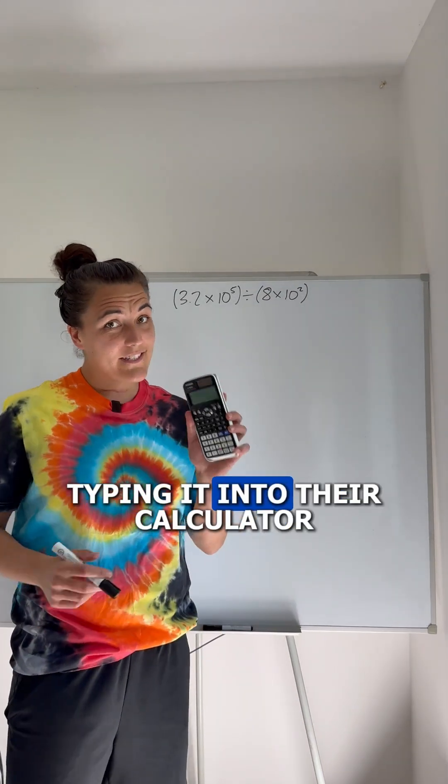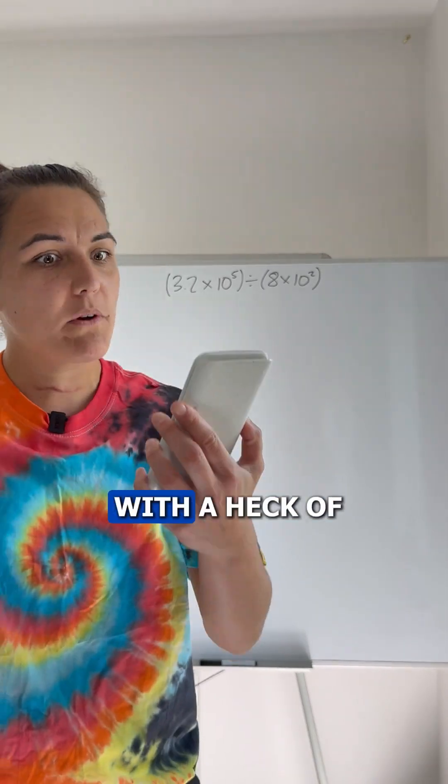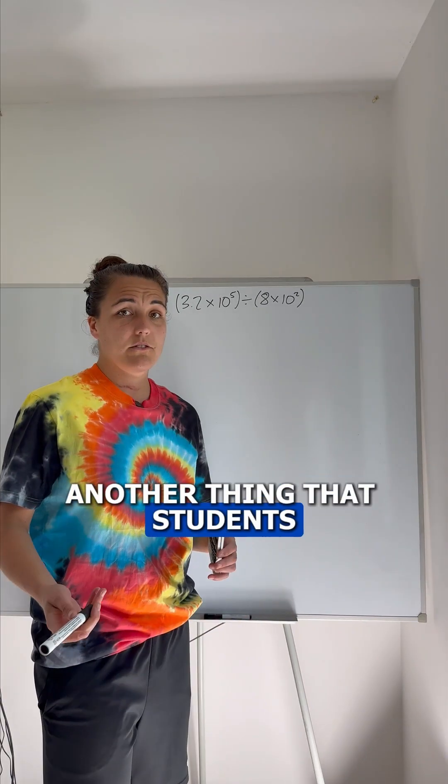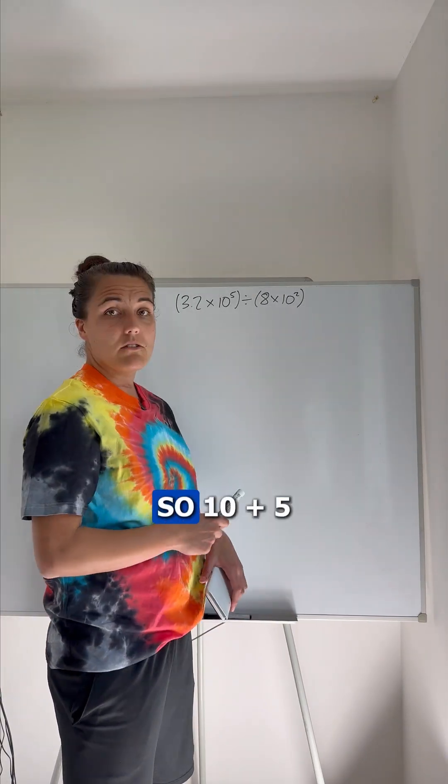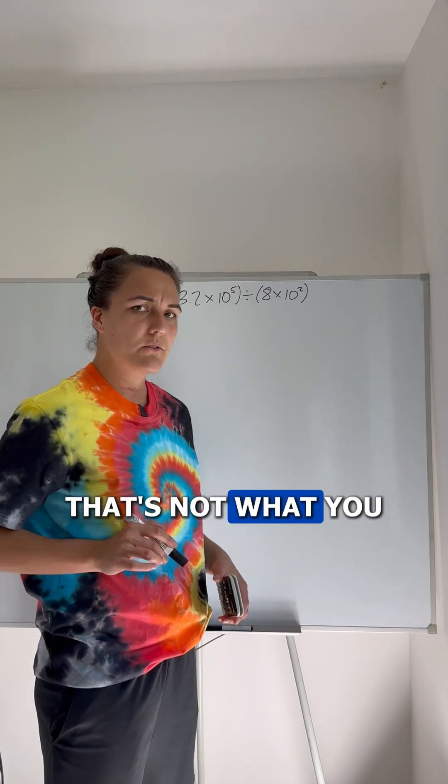Or you have students typing it into their calculator, forgetting to put all of the brackets in. What answer do you get? An even wilder answer with a heck of a lot of zeros. Another thing that students do is they just add these powers. So 10 to the 5 plus 10 to the power of 2, 10 to the power of 7. When in actual fact, that's not what you want to be doing in this question.